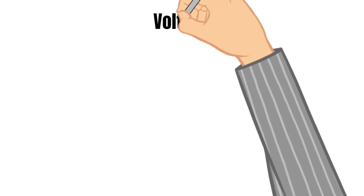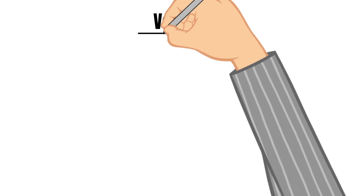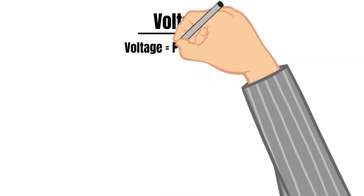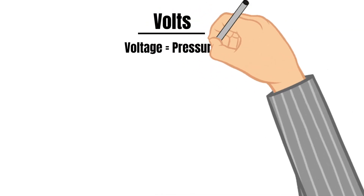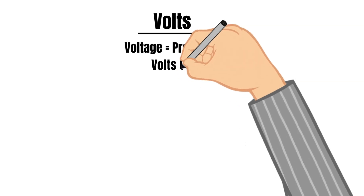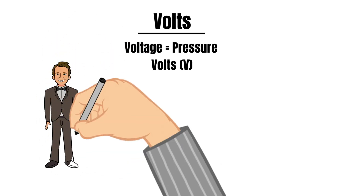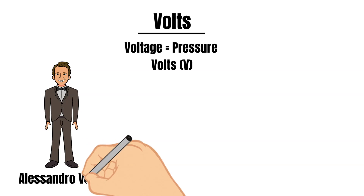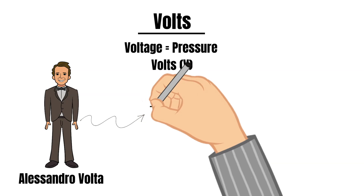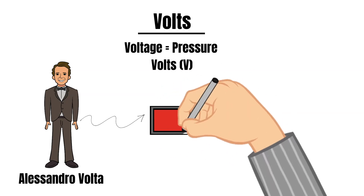The next unit of measurement we need to talk about is volts, and this measures voltage. Voltage equals pressure and is measured in volts using the abbreviation capital V. The term recognizes Italian physicist Alessandro Volta, the inventor of something called a voltaic pile, which was the forerunner to today's household battery.